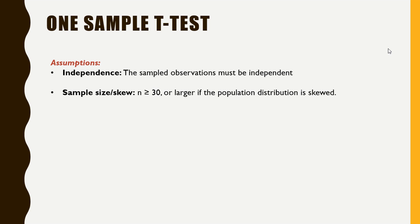Now let us come to the one sample t-test. This test includes only one sample which is assumed to be drawn from a normal population. The first assumption is independence - the sample observations must be independent. The second is that in case the sample is skewed, the sample size should be at least 30 or larger.